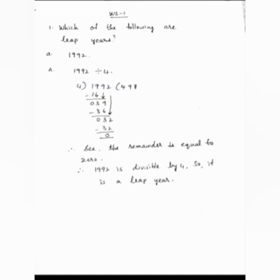What is the second digit? 9. So 9 together with 1 becomes 19. Now we have to do the division.